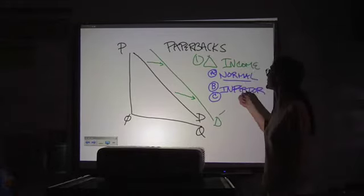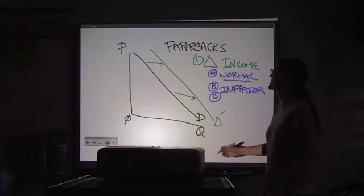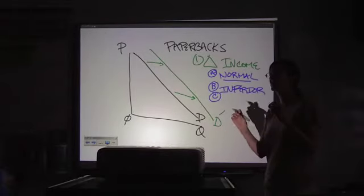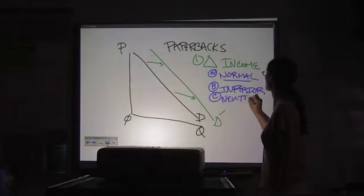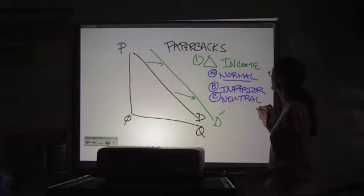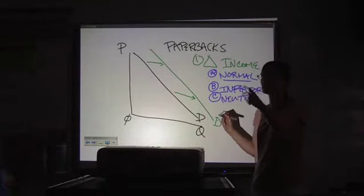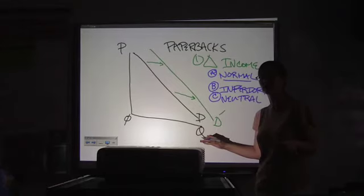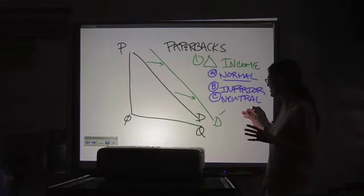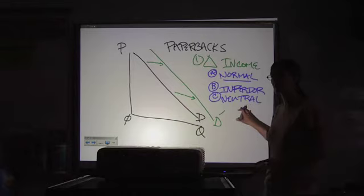All right, so inferior goods, you have more money, you buy less. A third category, which is not even mentioned in most textbooks, I don't even think it's in the one that we're using, is neutral. And they're called neutral because the idea is that if you had more money, you'd spend exactly the same amount on it. And there are actually very few goods for anybody that could fall into this category.